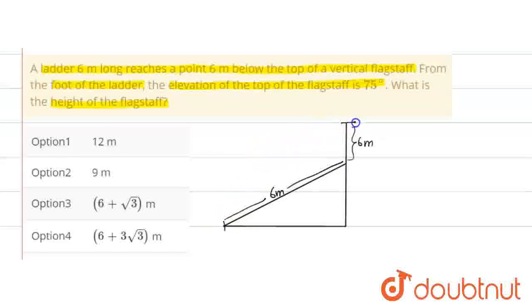The elevation of the top, the top of the flagstaff. The name of the flagstaff is A. The angle of elevation is 75 degrees. So this will be 75 degrees. Let's label the points as A, B, C, D.